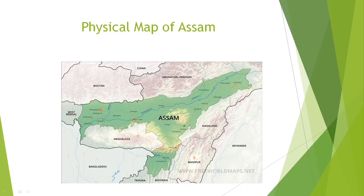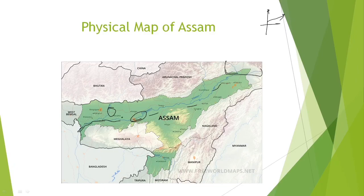Water features such as rivers and oceans are shown in blue color. The Brahmaputra River, for example, is shown in blue. Plains are shown in green color.